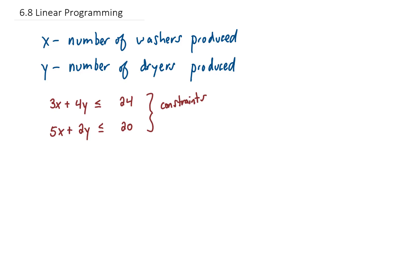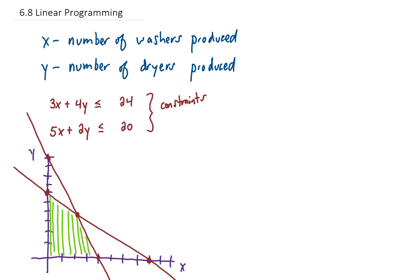If you went ahead and graphed those constraints on an x-y plane using the skills from the previous video, they would look like this. Because your factory is going to produce more than zero washers and zero dryers, the number of washers and dryers that you can possibly produce falls into this region right here, which we more generally call the feasible region.